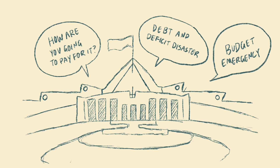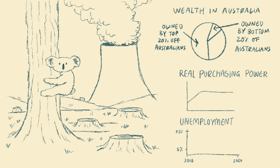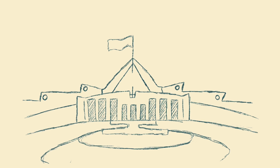Time and again we hear politicians warning us of the debt and deficit, saying we just can't afford to do anything about the multitude of problems facing Australia right now — from environmental decline, climate change, growing inequality, our real purchasing power flatlining, persistent unemployment, and an ageing and outdated electricity system. In this video we'll show you why Australia will never run out of money and why debate around debt and deficit is just a distraction from what really matters.